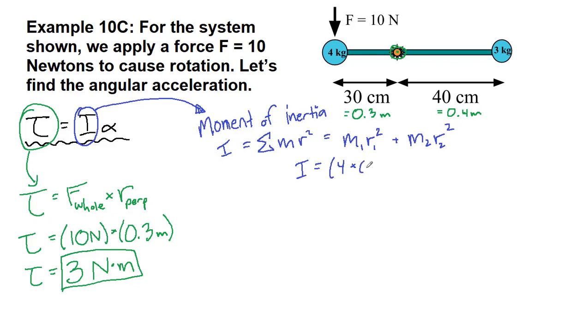4 kilograms times 0.3 meters, and the 0.3 is squared, not the whole thing. Plus 3 kilograms times 0.4 meters, which is squared.